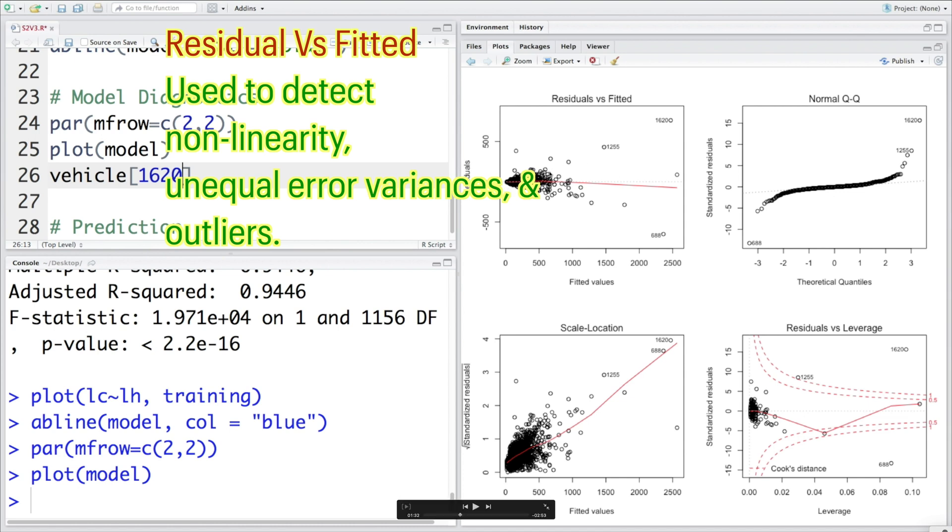Definitely this model has some issues there. The third important thing this graph tells us is whether there are any outliers. You'll notice that there is a point here referring to data point 1620, another one 1255, and then 688. These are sort of outliers in our data.